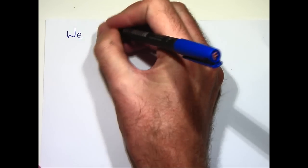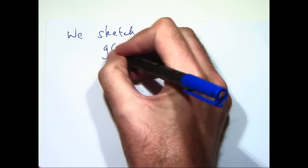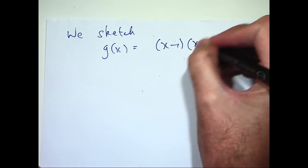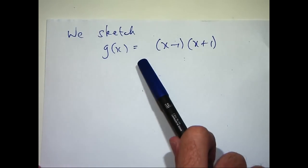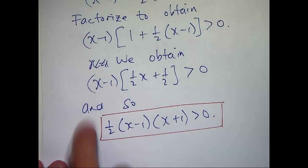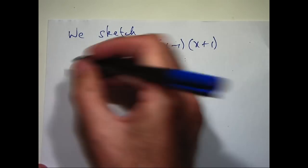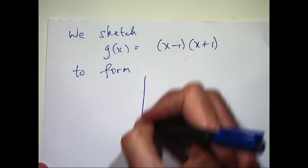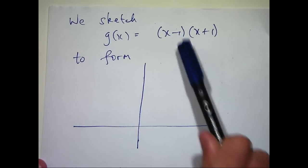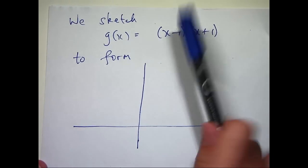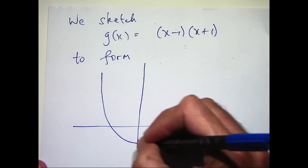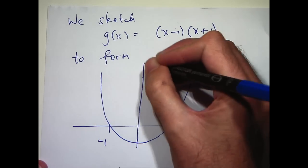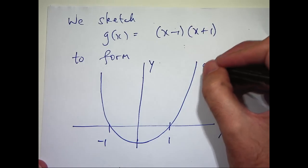So I'm going to sketch this function here. Notice I've left off the half. The half doesn't change the problem at all because when this is positive, this will be positive. So this is just a parabola and in particular, it's a parabola that's u-shaped and it's going to cut the axes at positive 1 and negative 1. So here's a quick sketch of our function g.